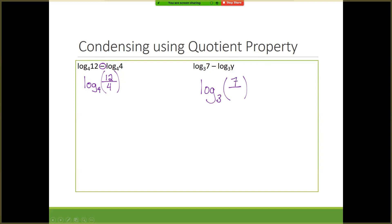The last property is the power property. It says any number that is an exponent can be brought down out front, or any number out front can be brought up to become an exponent. So for log of 4 squared — there's no base written, so it must be base 10. For the next one, log base 6 of x to the 3rd: the 3 gets brought up to become the exponent.